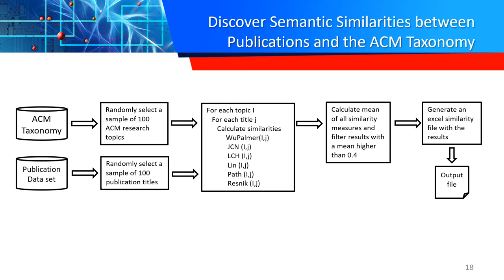The reason we do this is because we need to find which is the best semantic similarity to use, given that we have a large amount of publications and a very large amount of research topics, making the discovery of these correlations computationally demanding. We execute only the best-performing similarity measures. Once we have done this with the samples, we calculate the mean of all similarity measures and filter the results with a mean higher than 0.4, then generate an Excel file as the output of this process.